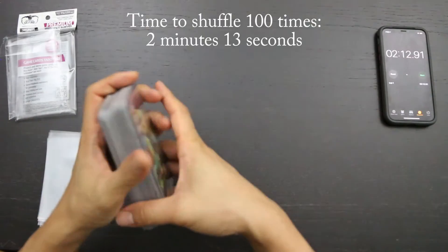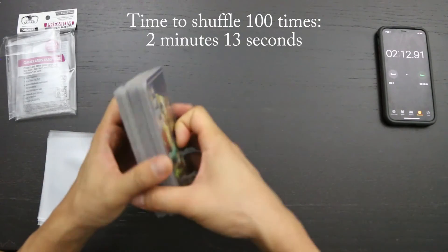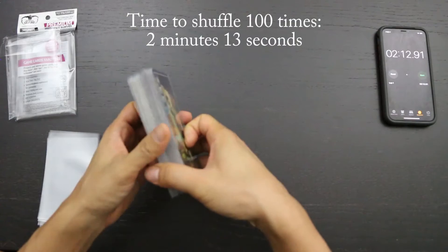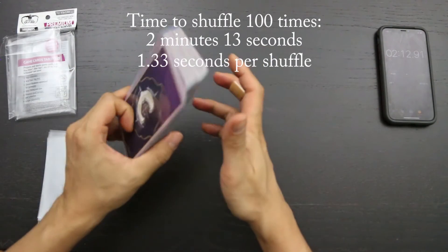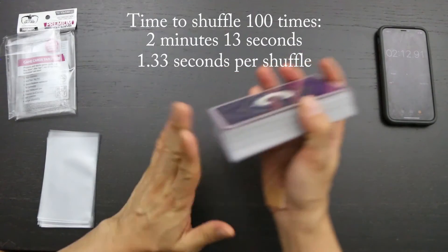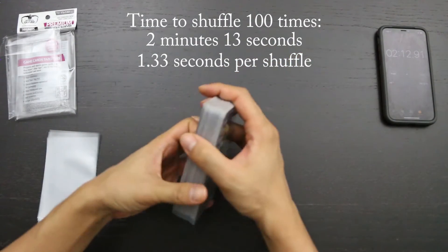Okay, that took 2 minutes and 13 seconds to shuffle these 100 times. And that is a very respectable fast speed of 1.33 seconds per shuffle, being one of the fastest shuffling sleeves that I've tried so far.